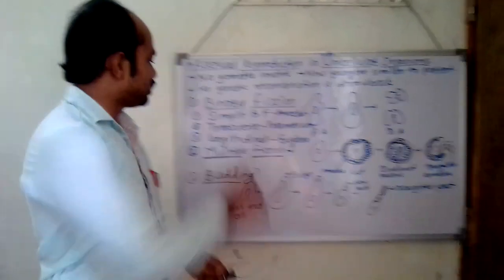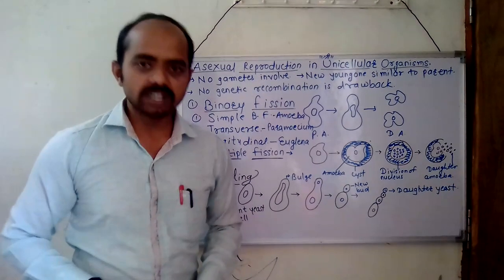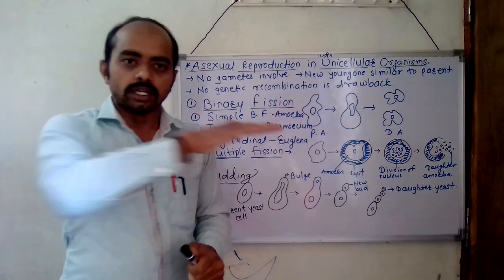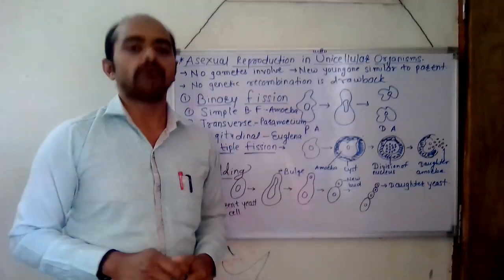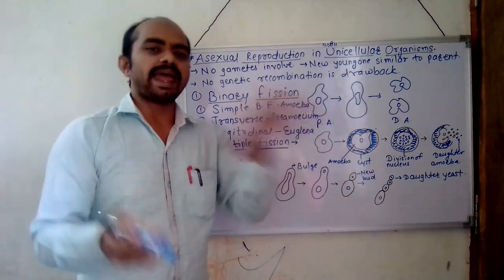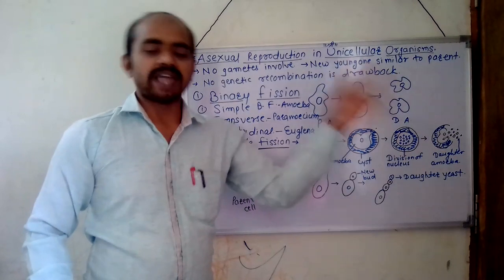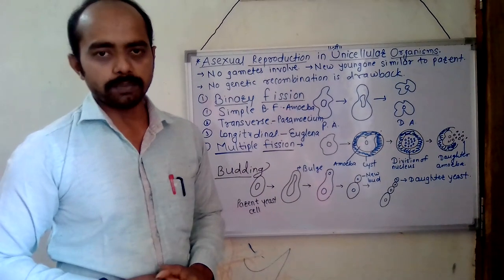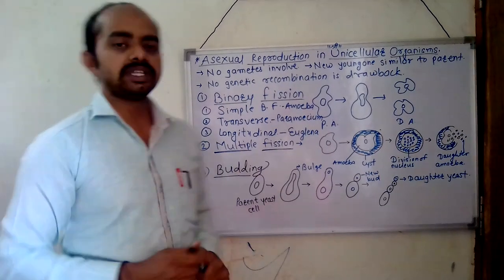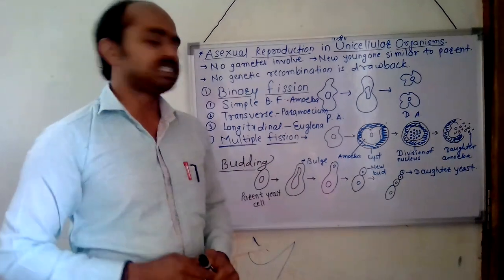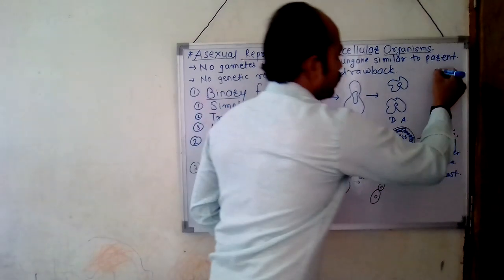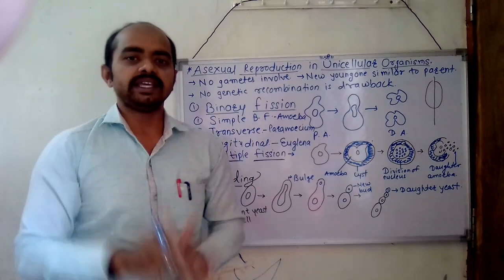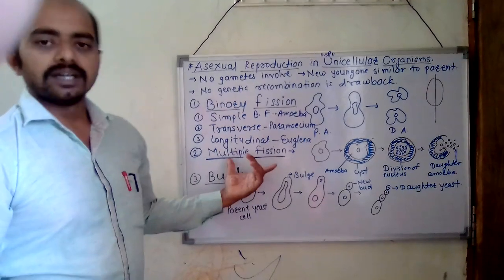Another subtype of binary fission is transverse binary fission. Let us take the example of paramecium. Paramecium is divided horizontally into two equal parts. Both the cytoplasm and the nucleoplasm get divided and they are produced as two daughter organisms. The third subtype is longitudinal binary fission. Let us take the example of euglena. Euglena divides vertically into two equal parts in a favorable condition. So these are the subtypes of binary fission.